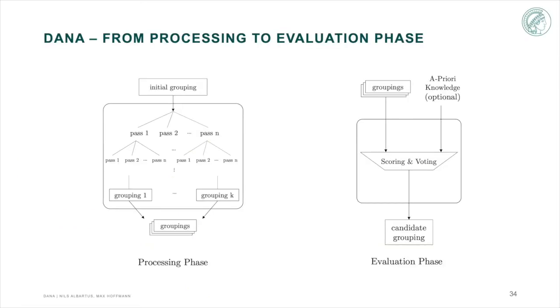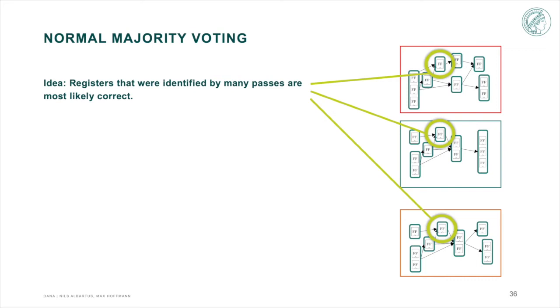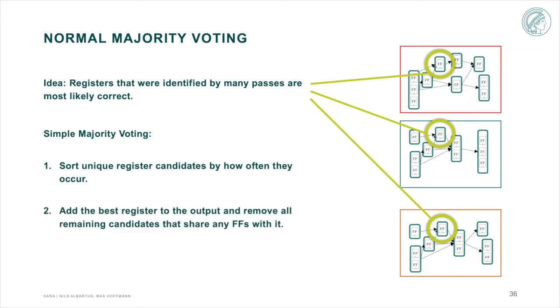All registers that were just created in the processing phase are now passed to the evaluation phase. The evaluation phase now condenses all information into a single grouping with the help of a specialized majority voting where the data decides the final output. Intuition here is that registers that were identified by a majority of passes are most likely correct. In the normal, simple majority voting, we sort all unique register candidates by how often they occur. We then choose from the top of the list the best register and remove all candidates that share any flip-flops with it. We repeat the process until no candidates remain and all flip-flops are assigned to a register.